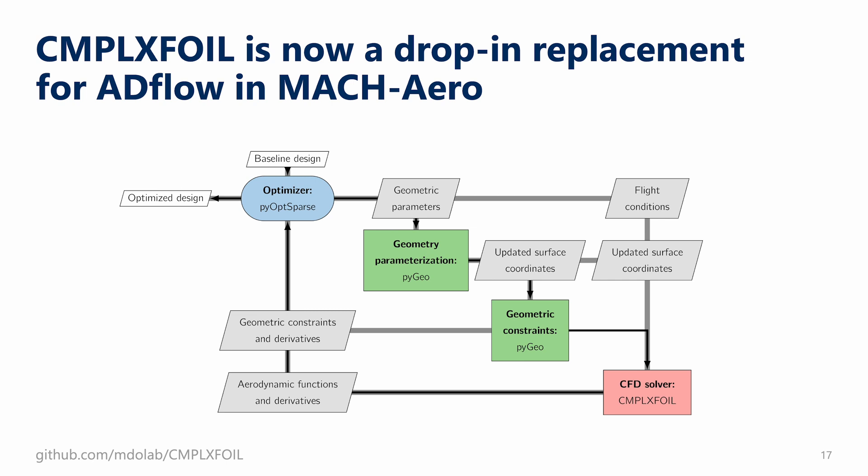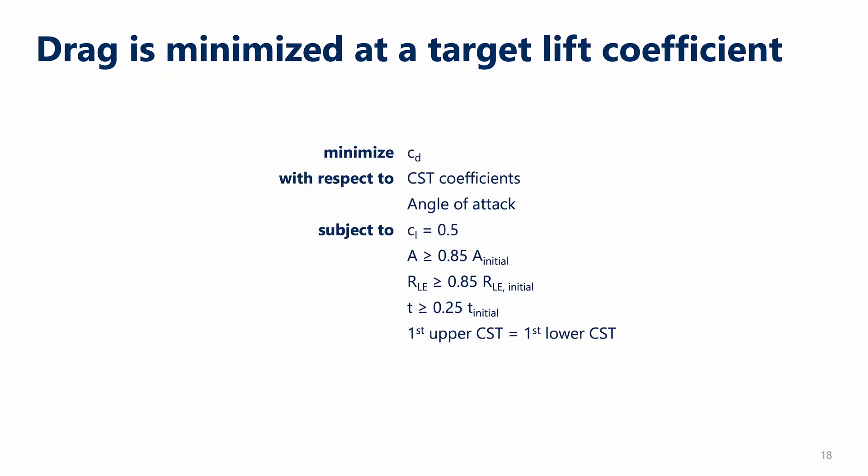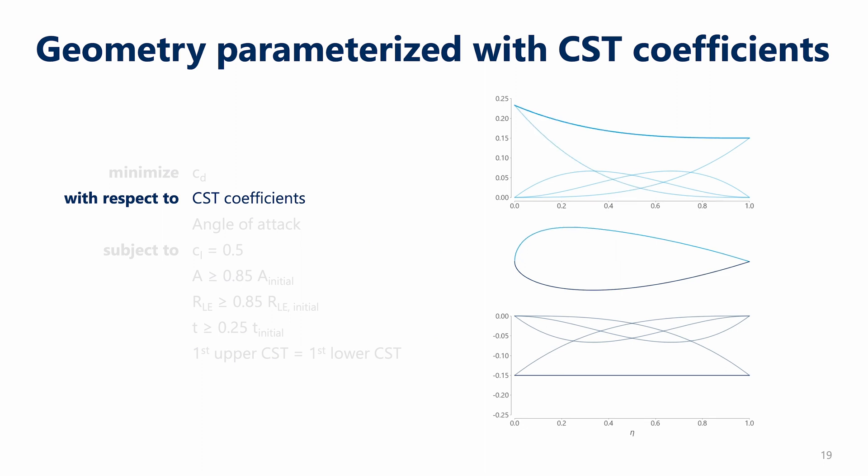The ComplexFoil framework looks very similar, except because ComplexFoil and XFOIL use only surface coordinates, there's no volume mesh or volume mesh warping involved, so this removes IDWarp from the framework. We use the same optimization problem throughout all of this work. Because the goal is to gain the most intuition possible, we use a relatively simple optimization problem where we minimize the drag of the airfoil at a single target lift coefficient. We parameterize the airfoil shape with CST coefficients.